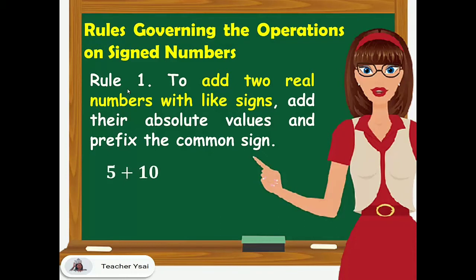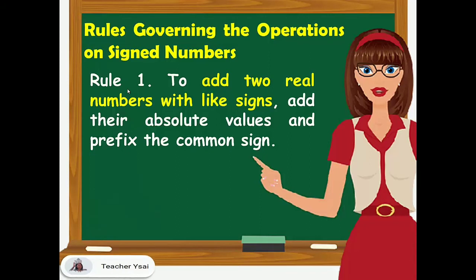For example, 5 plus 10 — the common sign is positive. So, the absolute value of 5 plus the absolute value of 10, that's 5 plus 10, is equal to 15.